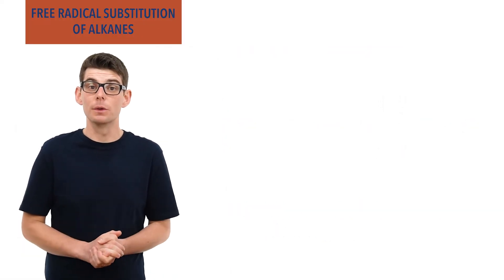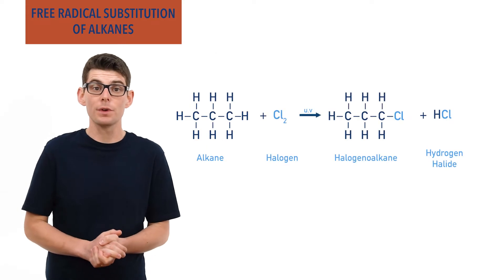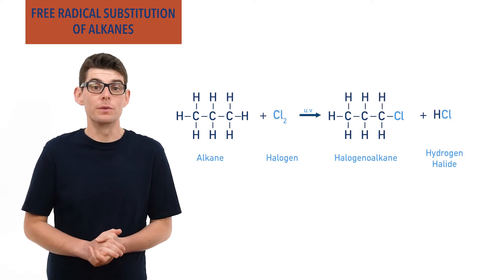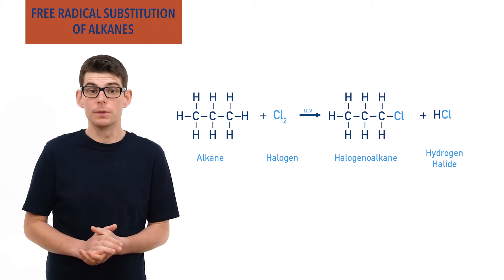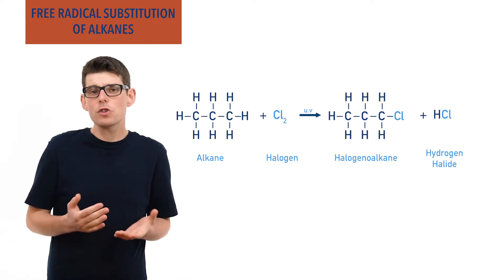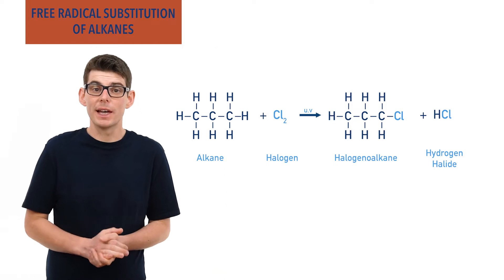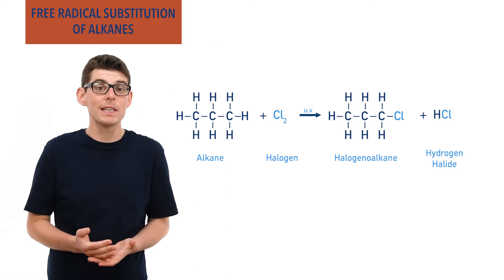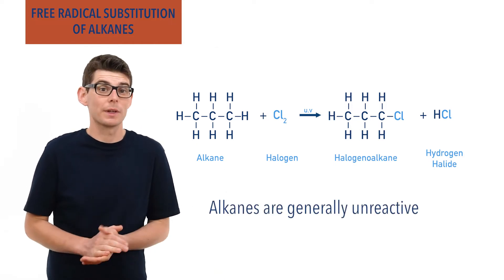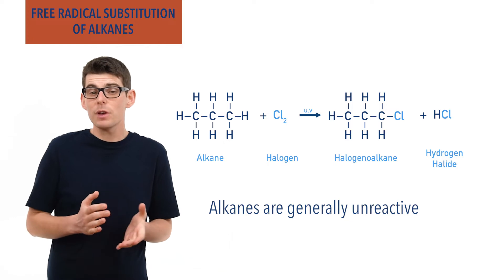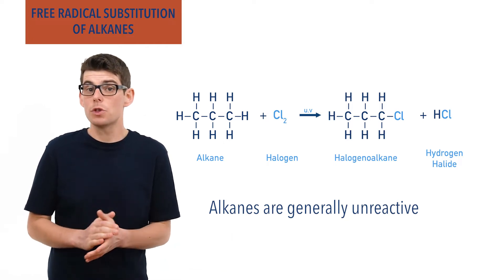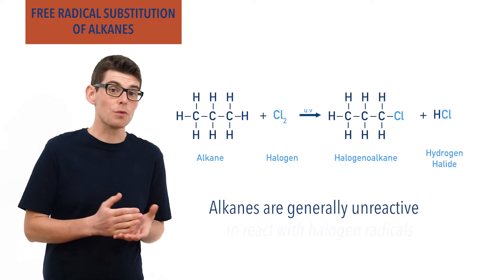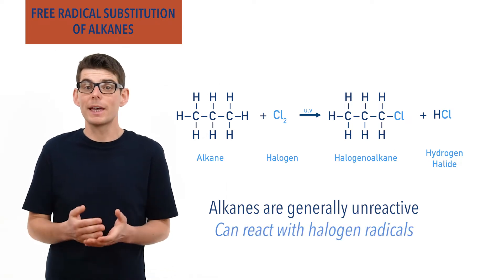Recap done? Let's go! Alkanes can undergo substitution reactions with chlorine and bromine in the presence of UV light, in what are called free radical substitution reactions. Alkanes generally have a low reactivity and don't readily react with many things in organic chemistry. In free radical substitution reactions, however, halogen radicals are produced that are themselves so reactive they can force an alkane to react.